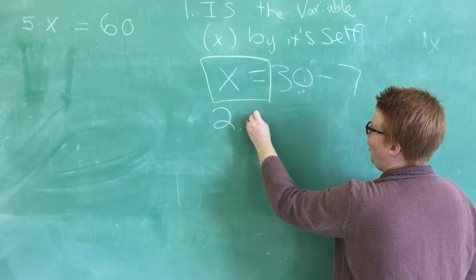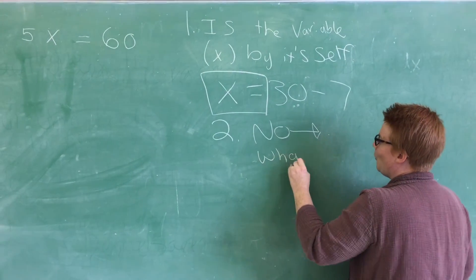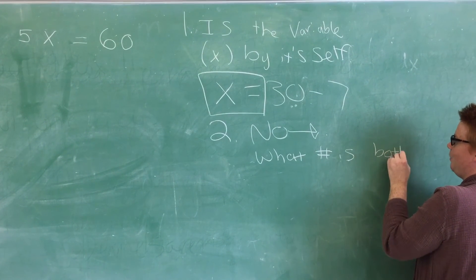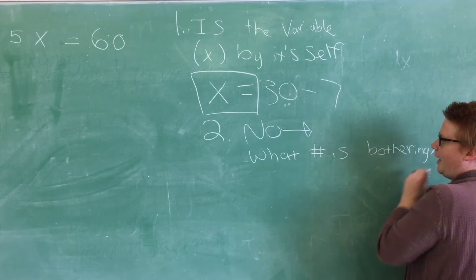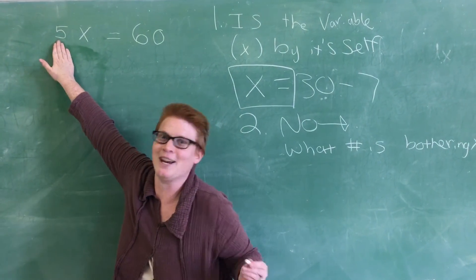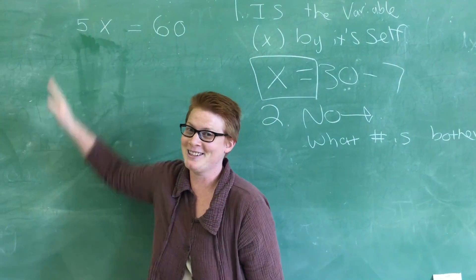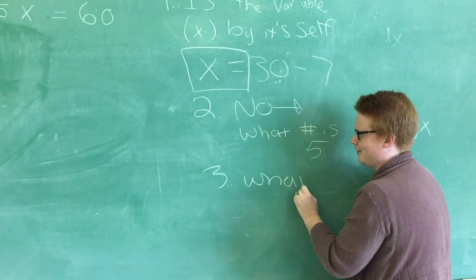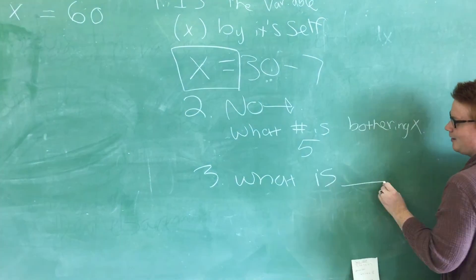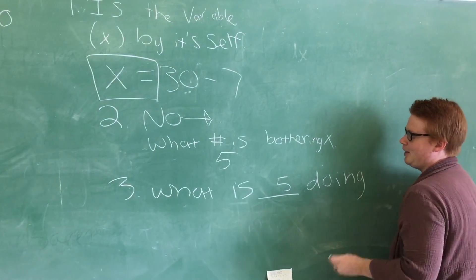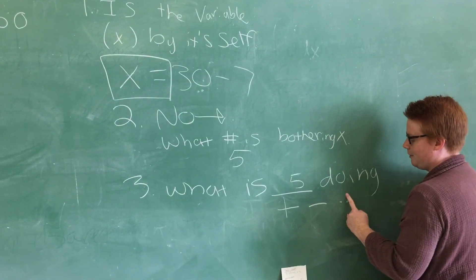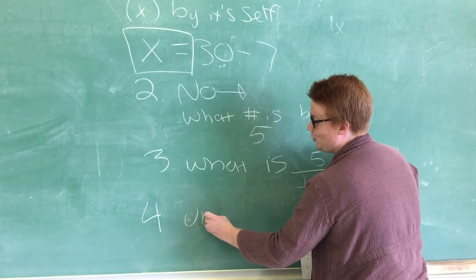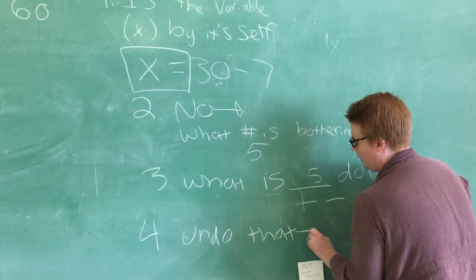If yes, you're done. If no, then figure out what number is bothering x, or coming between it and its beloved equal sign. In this case, x is not by itself because there's this 5 next to it, and that's not okay. X needs to be by itself. So the third step is: what is that number doing there? Is it being added, subtracted, multiplied, or divided? And then after that, you figure out what it's doing and undo that — meaning do the opposite.